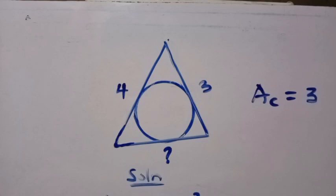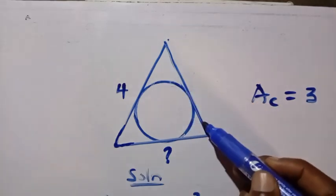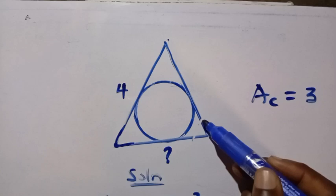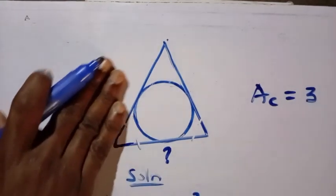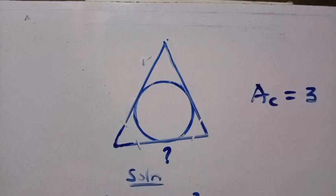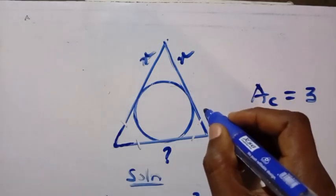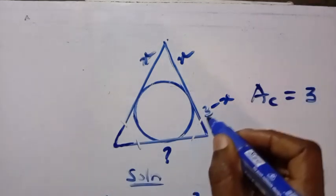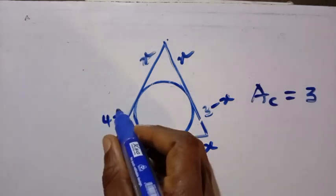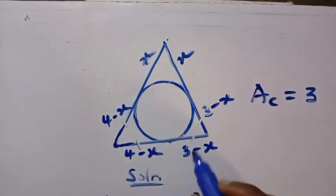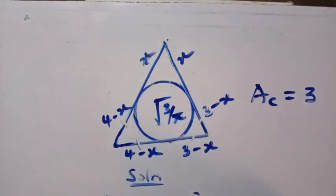Coming back to the diagram, the two tangent segments from each vertex to the circle are equal. If we call one segment x, then for the side of length 3, the other tangent segment becomes 3 minus x, and for the side of length 4, the other tangent segment becomes 4 minus x. The radius of this inscribed circle is √(3/π).